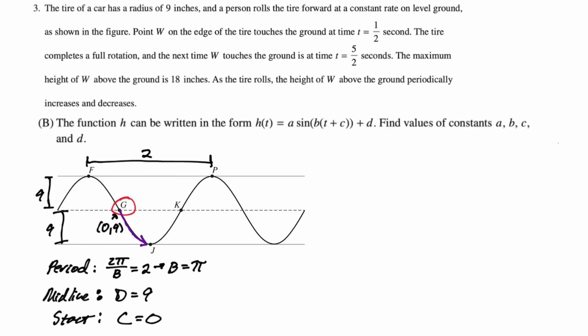So since we're starting at an intercept and going down to a minimum, we're using a negative sine graph. So a is going to be negative nine. You had to choose positive nine or negative nine. If you're starting in the middle and going to a minimum, negative nine is the way to go. So we've listed a, b, c, and d.